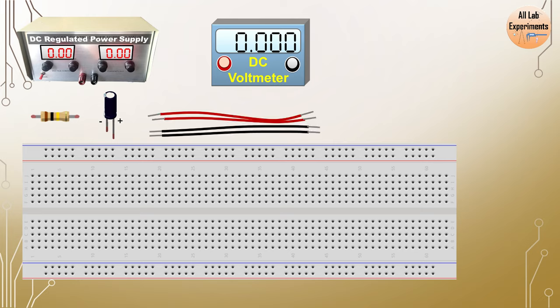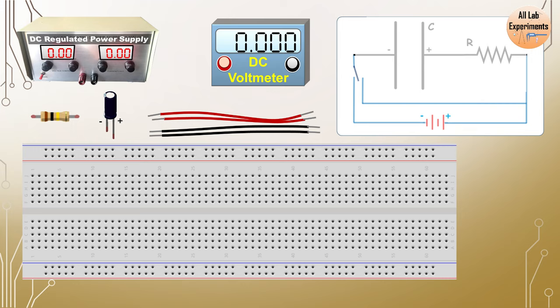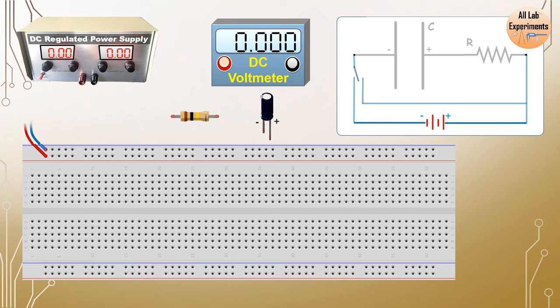Now in the first step we connect our power supply to the breadboard's two horizontal lines on the top. In the circuit you can see that the battery and the connected wires have been highlighted.